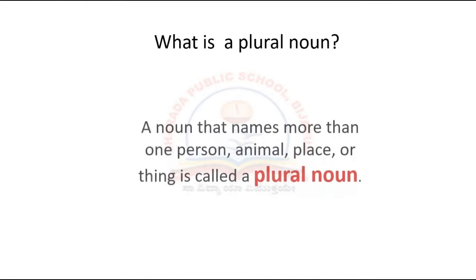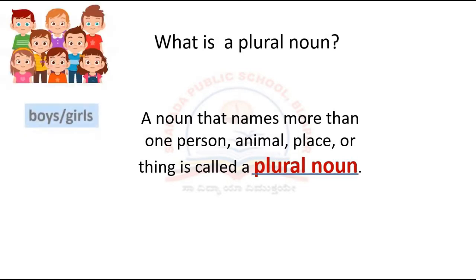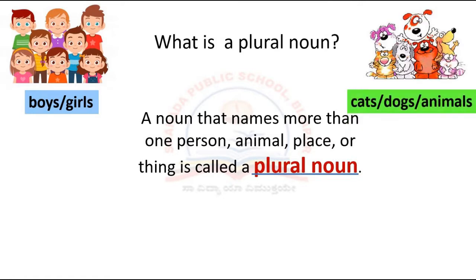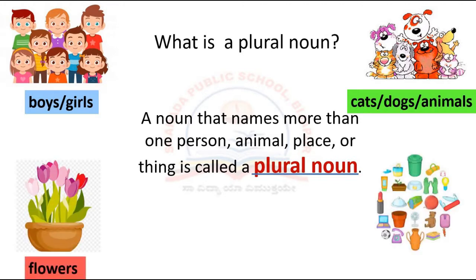What is a plural noun? A noun that names more than one person, animal, place or thing is called a plural noun. Examples are boys or girls, cats or dogs or animals, flowers, things.